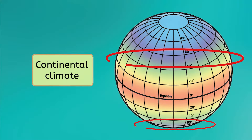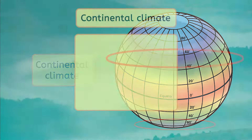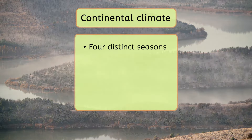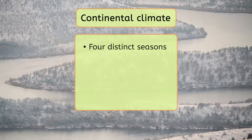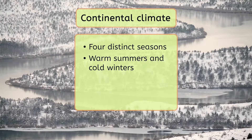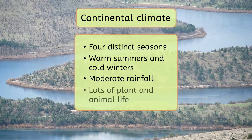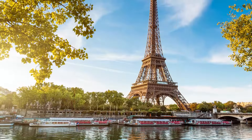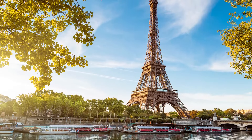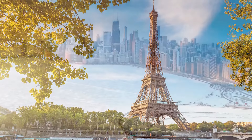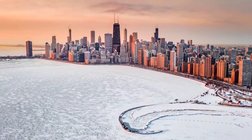Continental climates are found just past temperate climates. They are similar to temperate climates in that these regions experience four distinct seasons, but continental climates tend to have milder summers and harsher winters. Like temperate climates, continental climates also get moderate rain and have lots of plant and animal life. If you don't mind snowy winters but still enjoy warm summers, you might want to live in a continental climate. Paris, France and Chicago, Illinois both have this climate type.